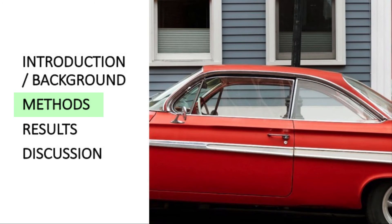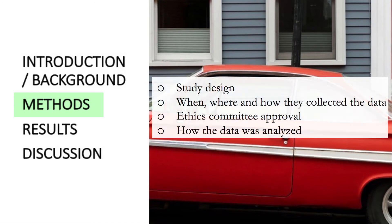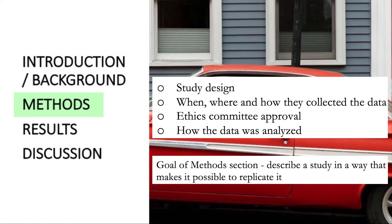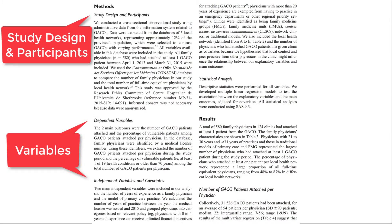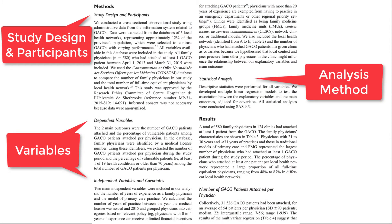The methods section describes what the authors did: the study design, when, where, and how they collected the data, ethics committee approval, and how the data was analyzed. The goal is to describe a study in a way that makes it possible to replicate it. However, the authors do not always provide detailed descriptions of what they did. In this example, you see that the authors describe what was collected, what were the variables, and the analysis method.